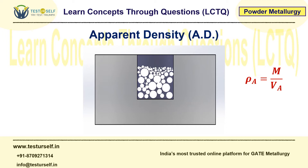Here the subscript 'A' is used just for convenience — A denotes the apparent density. The volume of a cylinder is pi r squared h, so this is pi r_A squared h_A, where the subscript A again refers to the apparent density condition.